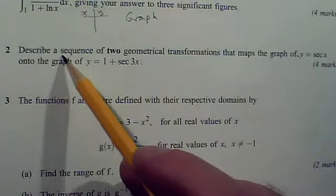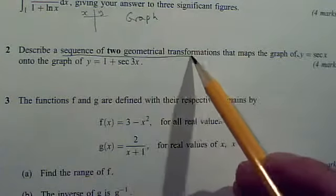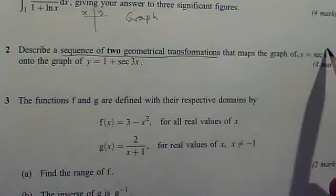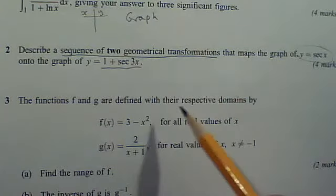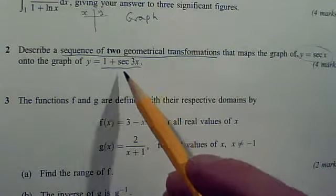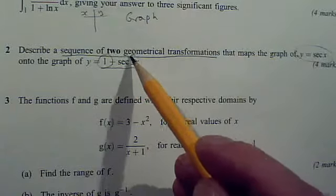Okay, in this question, we've got to describe a sequence of two geometrical transformations. We've got to get from this graph, y equals sec x, to this other graph. So we've got to account for what happens to the graph with these two numbers here.